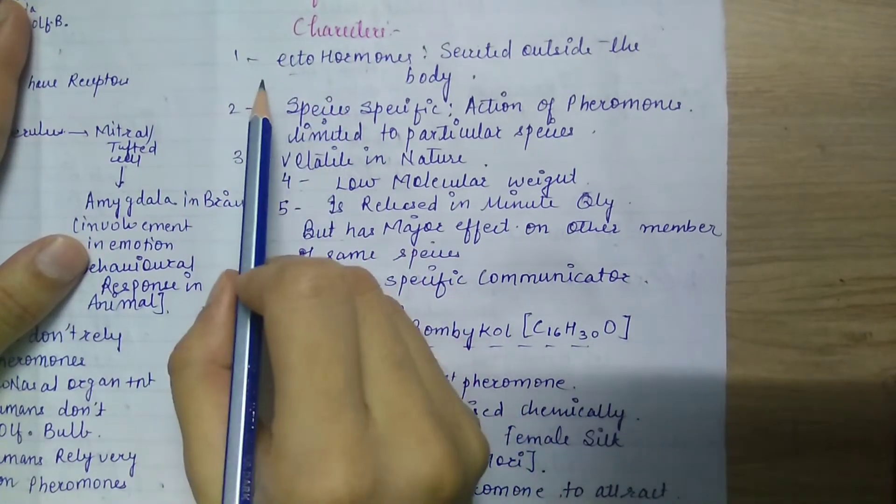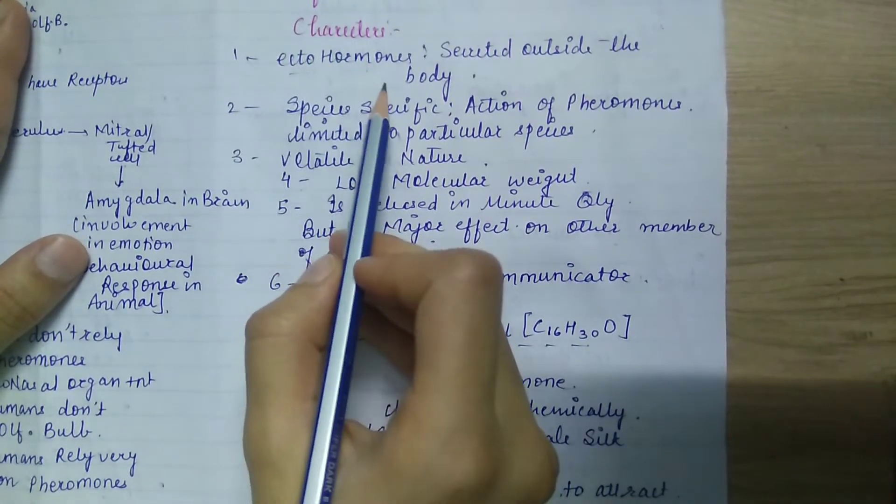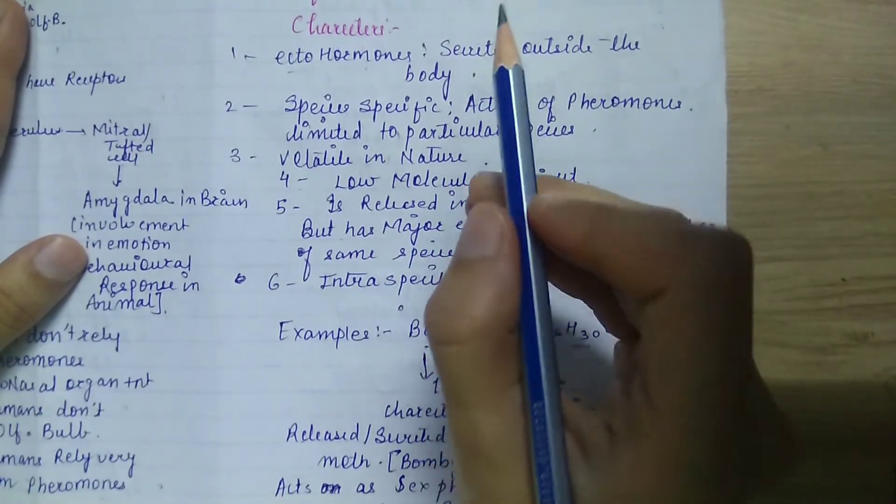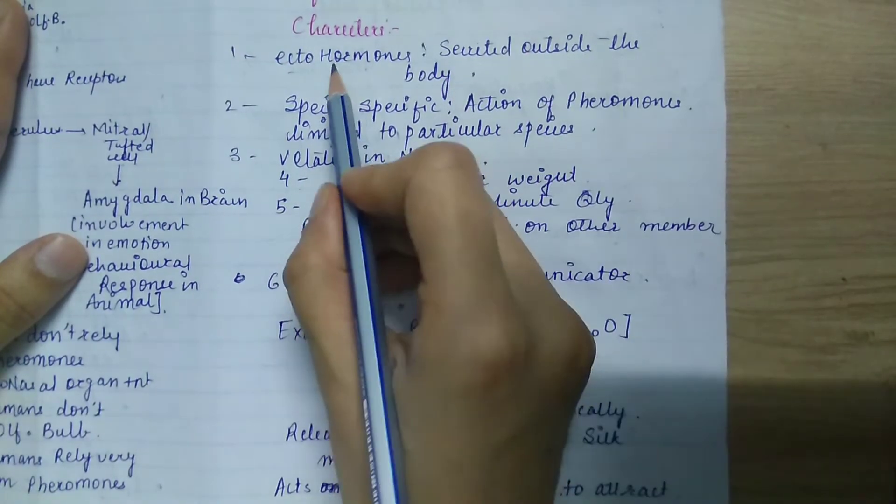In the characteristics portion, first statement is ectohormones. Pheromones are ectohormones because they are secreted outside the body.